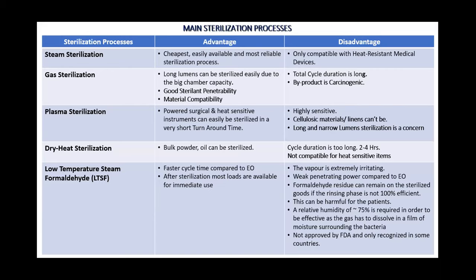The main disadvantage of steam sterilization is heat-resistant materials. The main difference between sterilization processes is material compatibility — if materials are not compatible, we cannot use that particular sterilization process. Gas sterilization has good penetrability and material compatibility. But if I need four or five laparoscopic surgeries in a day with only one set of instruments, it is very difficult to generate sterilized instruments that quickly. However, for long cardiac catheters needing good penetration and material compatibility, we definitely require gas sterilization.